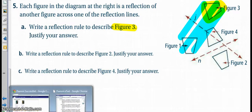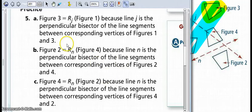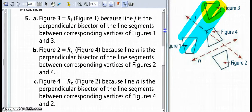Here are the solutions. Possible rules that you might have written. Line j is the perpendicular bisector of the line segments between. So that's because if I draw these line segments between figure one and three, we see that the line is the perpendicular bisector.